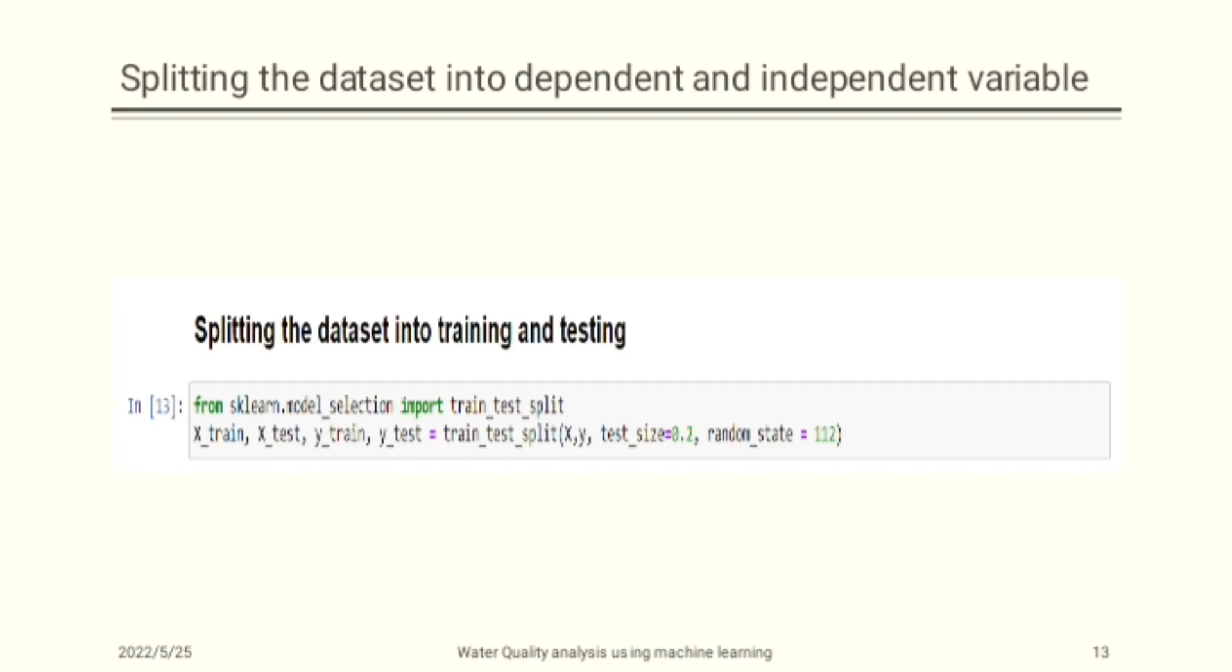Next is splitting the dataset into dependent and independent variables. First, divide the data into the dependent and independent features. All features are independent except portability, as portability is our dependent feature. Second, split the dataset into training and testing using the train test split function. Third, apply feature scaling to the model to bring the values in the range of 0 to 1 so that there is no big difference in the values in variable columns.